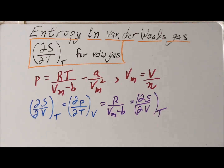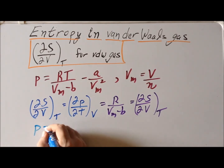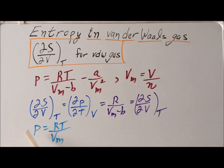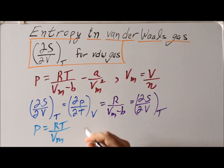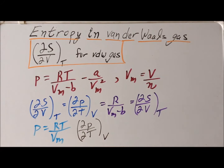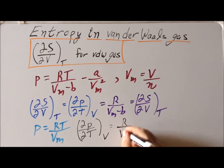What about for the ideal or perfect gas? Recall that the equation of state is P equals RT divided by V_M. So we find the change in entropy with respect to volume for the ideal gas by again calculating the corresponding partial derivative, which by the Maxwell relation equals what we want. Taking the partial derivative of P with respect to T at constant volume — the same as constant molar volume — gives the very easy result: R divided by V_M.